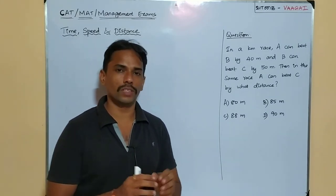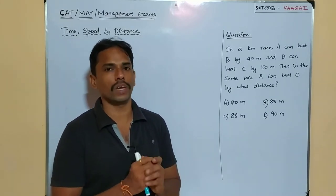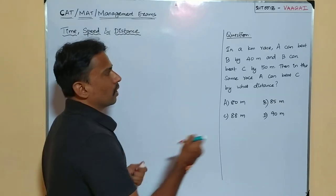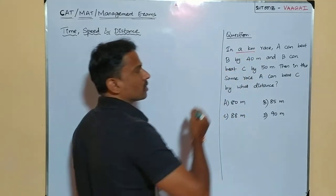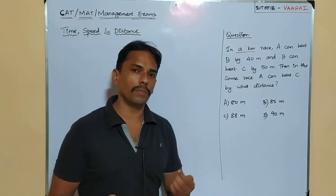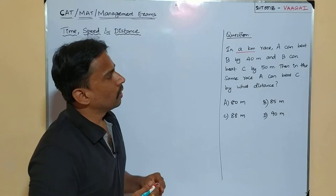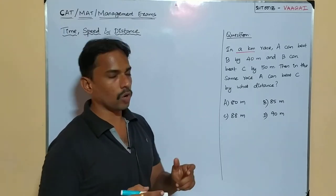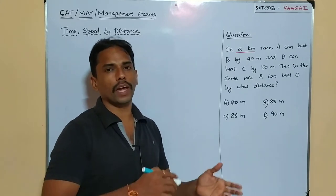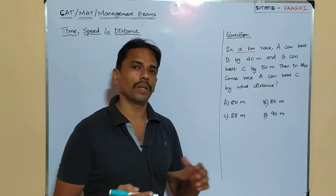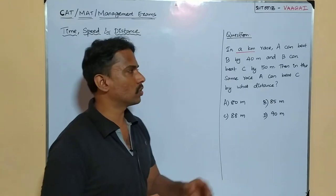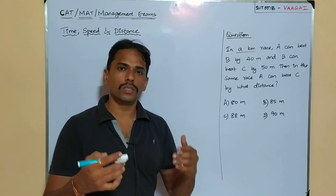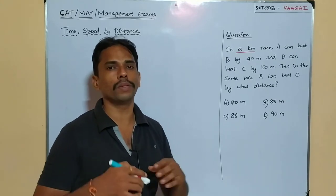We have an interesting question from the concept of races. In a 1 kilometer race, A can beat B by 40 meters. This kind of question you can commonly see — A can beat B, B can beat C, and so on. Students still have many confusions about what is meant by 'beating', so let us carefully understand that meaning through this problem.